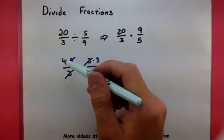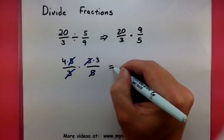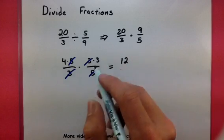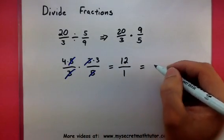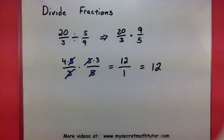And now when we multiply across the top, we get twelve, nothing in the bottom, so just a one, giving us a final answer of twelve.